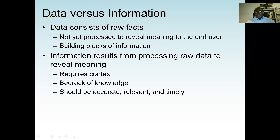Now let's go through the definitions. What is data and what is information? Data consists of raw facts — facts that have not been processed yet to reveal meaning to the end user; they are the building blocks of information. For example, the number of hours I work (20 hours) and my pay rate ($7 an hour) are both just data. But if I process these two data points and come up with my salary, then the salary becomes information — it's data that has been processed.